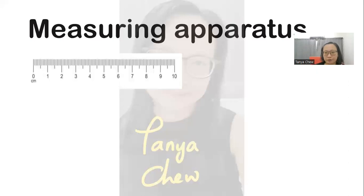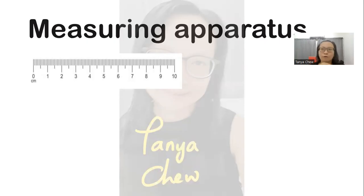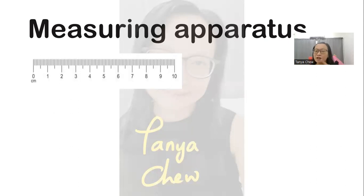These are all the measuring apparatus that you can easily obtain in your laboratory. Any readings that you take from the apparatus are called raw data — that reading from the apparatus is called raw data. For raw data, you have to look at the decimal points. How many decimal points you should record is determined by looking at the absolute uncertainty of the measuring apparatus.